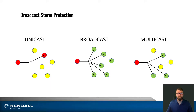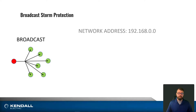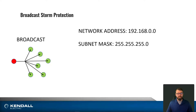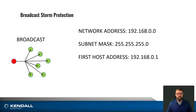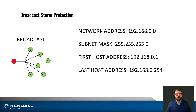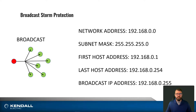Broadcast traffic is specifically designed to go to a particular network address. On an IPv4 network, let's look at an example. If we were to have a network address of 192.168.0.0 with a subnet mask of 255.255.255.0, our first host address would be 192.168.0.1. The very last address in a subnet is reserved for the broadcast range — in this case, 192.168.0.255.